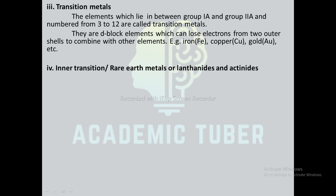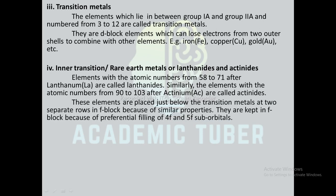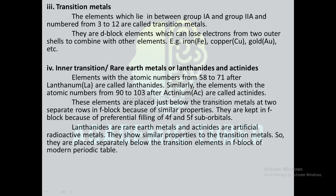Inner transition or rare earth metals — lanthanides and actinides: elements with atomic number from 58 to 71 after lanthanum are called lanthanides, and elements with atomic number from 90 to 103 after actinium are called actinides. These elements are placed just below the transition metals in two separate rows in the f block because of similar properties, kept there due to preferential filling of 4f and 5f orbitals. Lanthanides are rare earth metals and actinides are artificial radioactive metals.